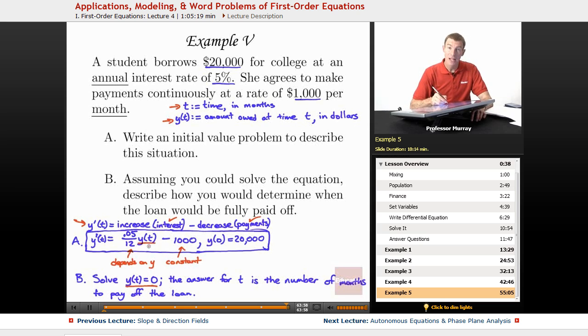So the interest depends on how much she owes at any given time. And we said it's 5% interest, so that's .05, but that was an annual interest rate. So our monthly interest rate, you just divide that by 12. That's where that 12 came from. That was the conversion from years to months. And then her decrease is just the fact that she's paying off $1,000 a month. So we just subtract $1,000 from y prime there. So that gave us the differential equation.